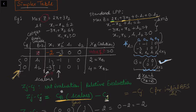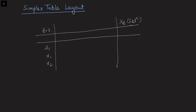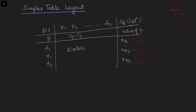To summarize the simplex table layout: we write the basic variables and their solutions xB on one side, the scalars for all decision variables, and the zj minus cj row. The z value is also recorded. The solution side (xB) ensures feasibility — all values must be greater than or equal to 0 — while the zj minus cj side ensures optimality. In the next video, I will explain what are the optimality criteria and the feasibility criteria.